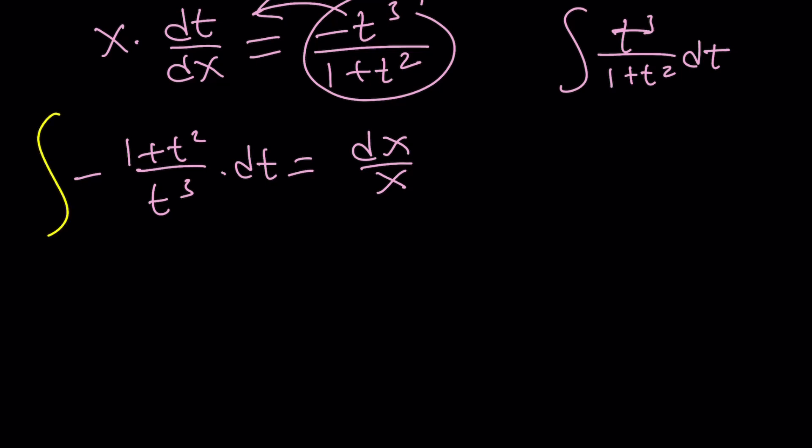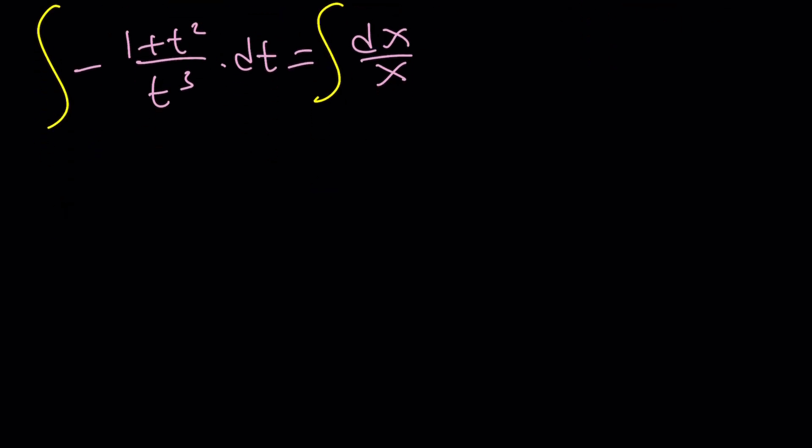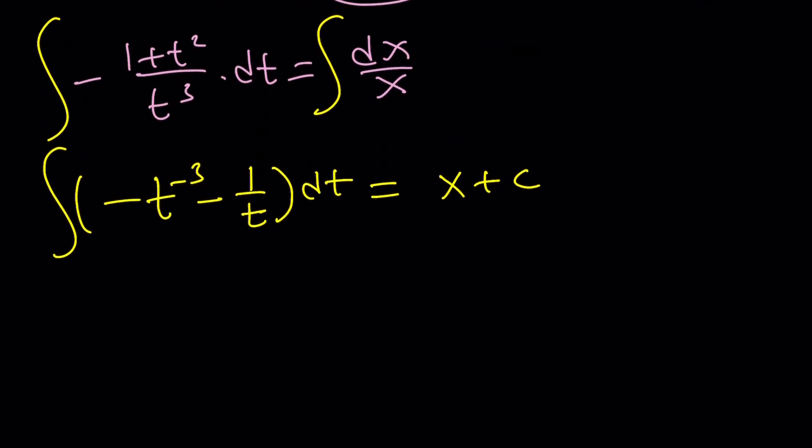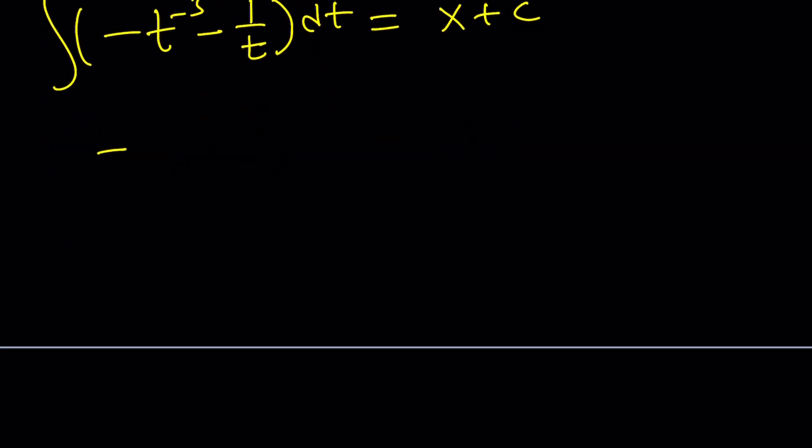And now we can integrate both sides. That's going to give us the integral of this. But how do you integrate that? It's -t^(-3) - t^(-1), or you can write it as 1/t. So how do you integrate this? Easy. Now this is going to be x + c. And to integrate t^(-3), all you have to do is add 1 to the exponent and divide by that resulting exponent. It's going to be like this.